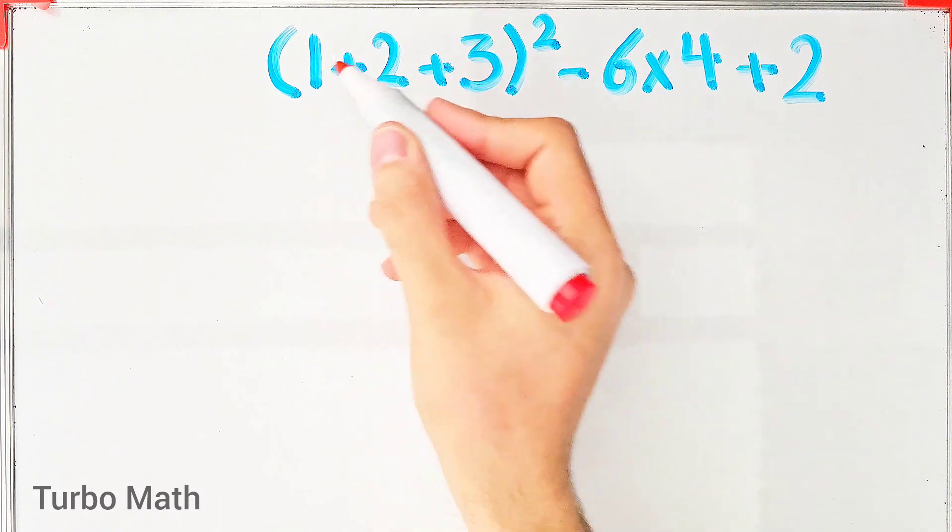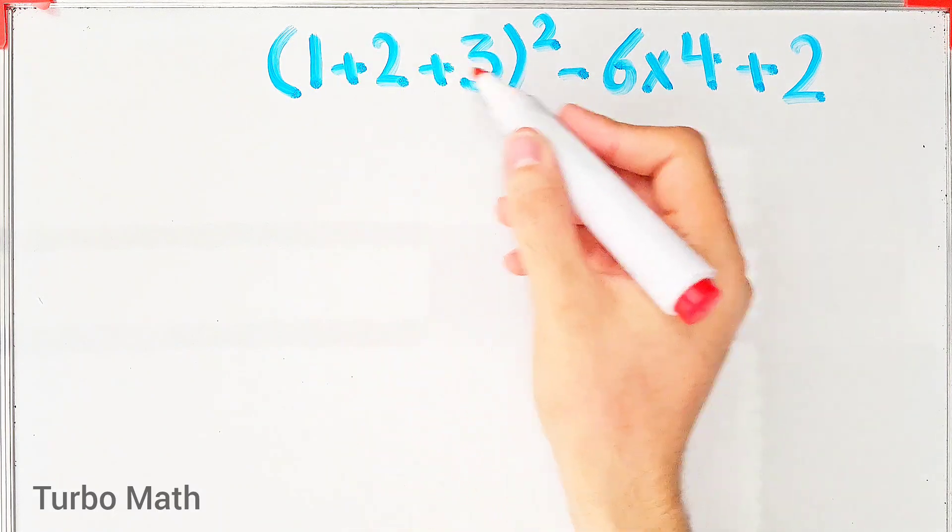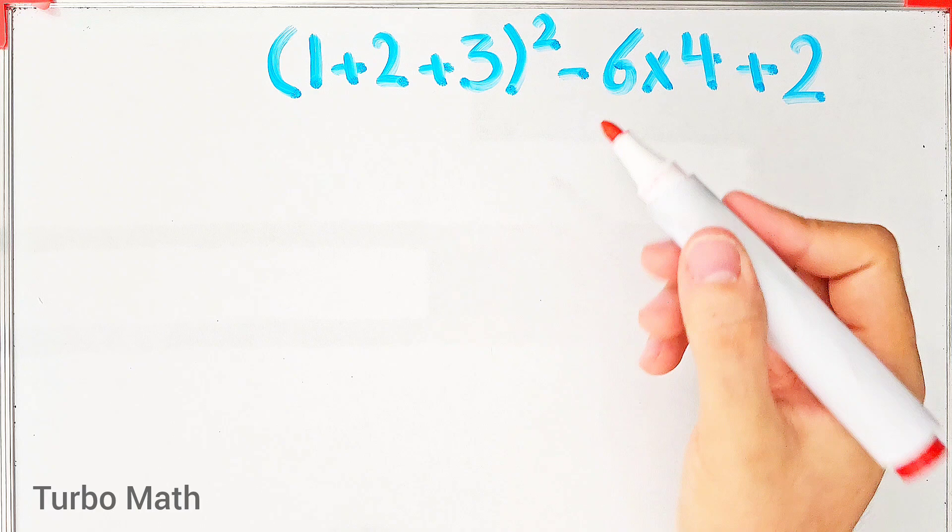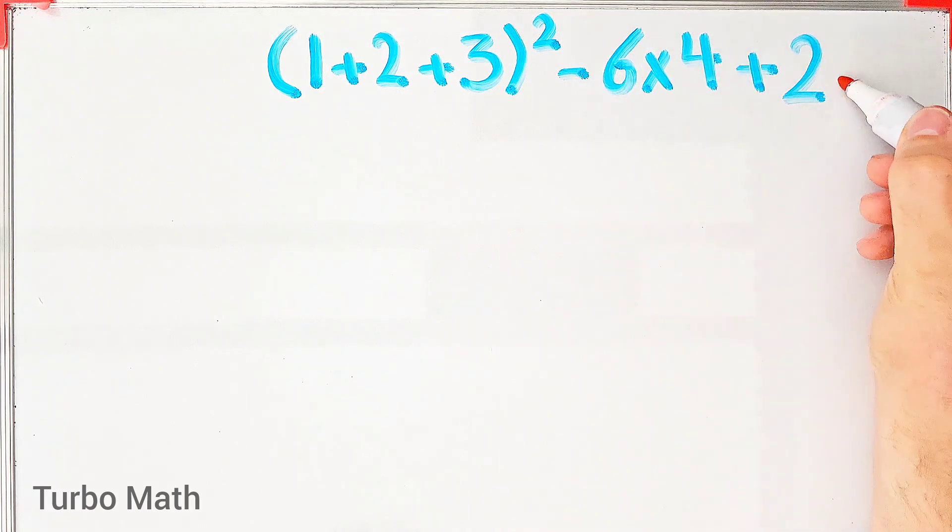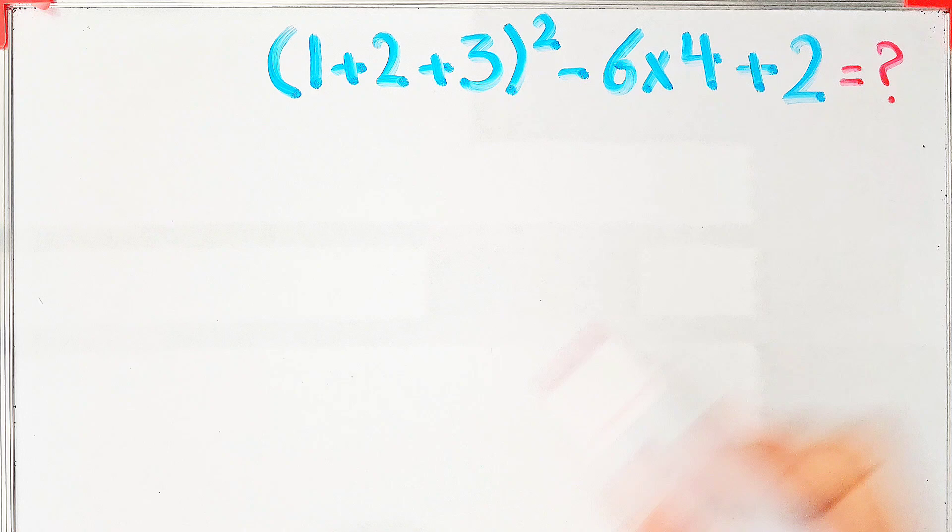Hi guys, welcome to Turbo Math channel. (1+2+3)^2 - 6×4 + 2. What is the answer to this question? Can you solve it?